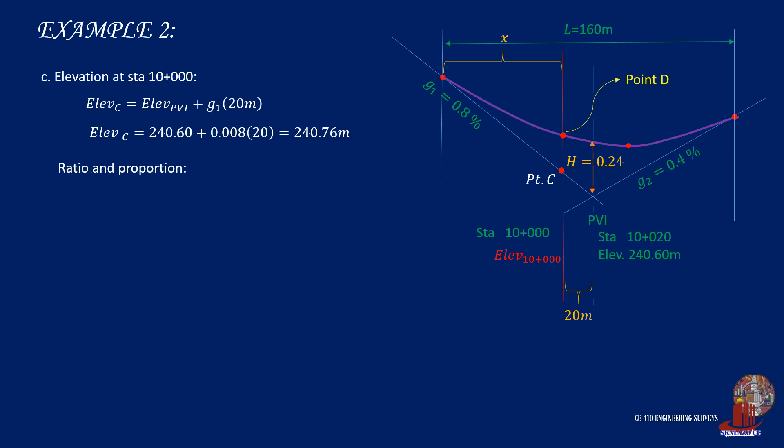Now use ratio and proportion with the verticals and the square of horizontals, and Y is computed as 0.135 meters. So now we can take the elevation of the curve at station 10+000 by adding Y with the elevation at point C, and we get 240.895 meters.